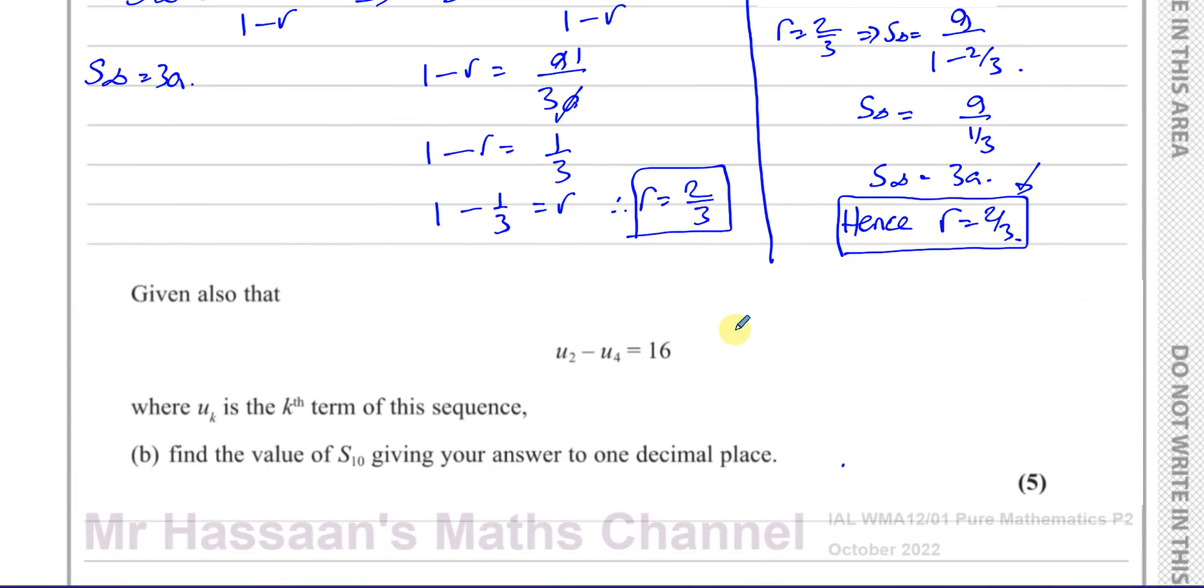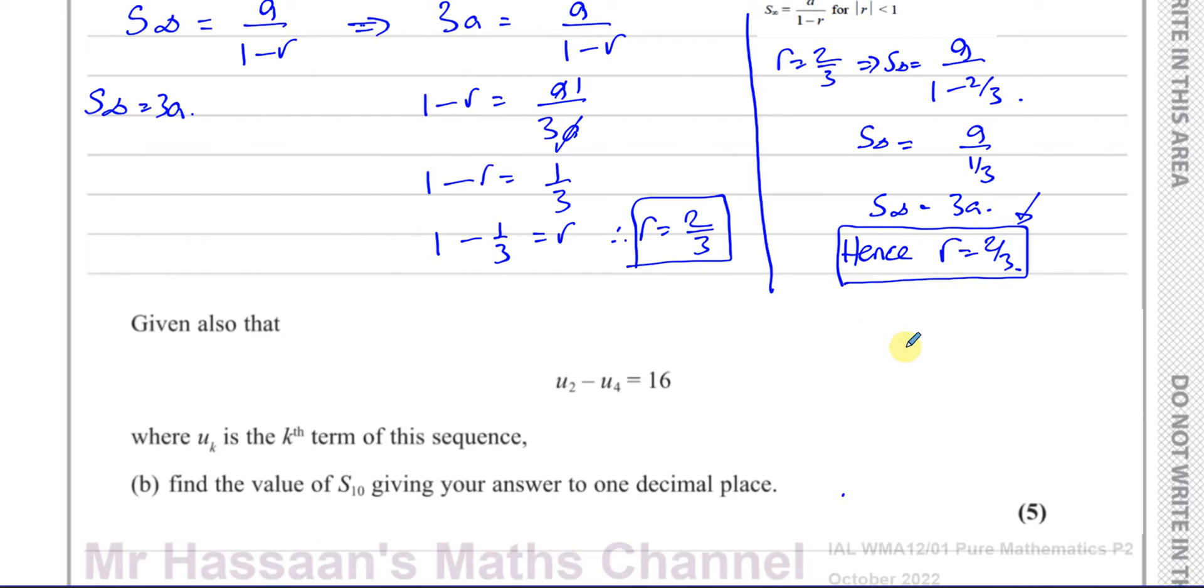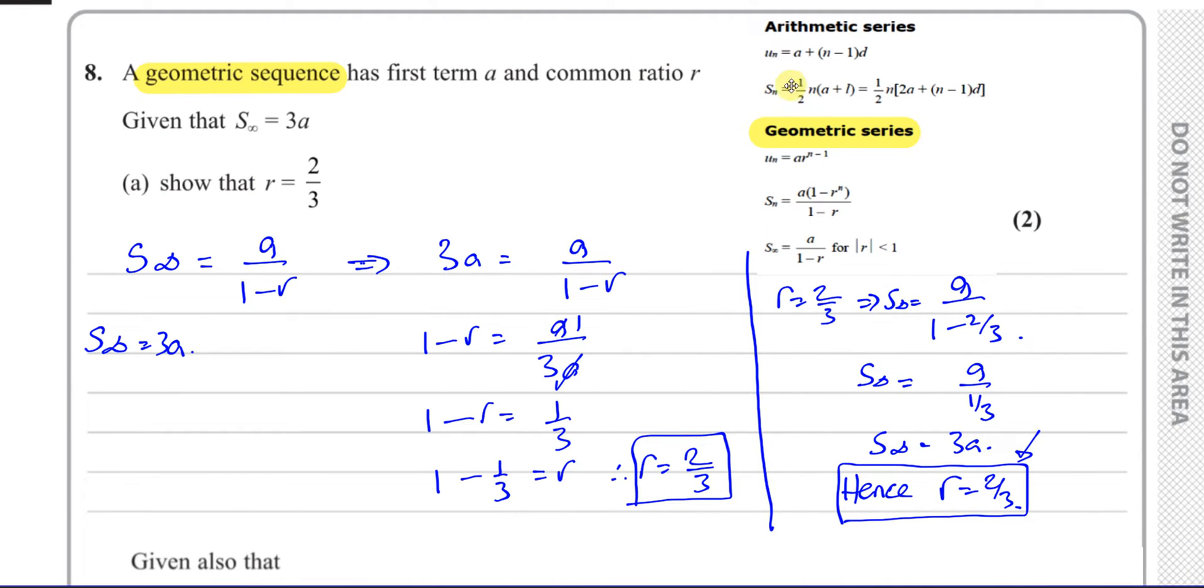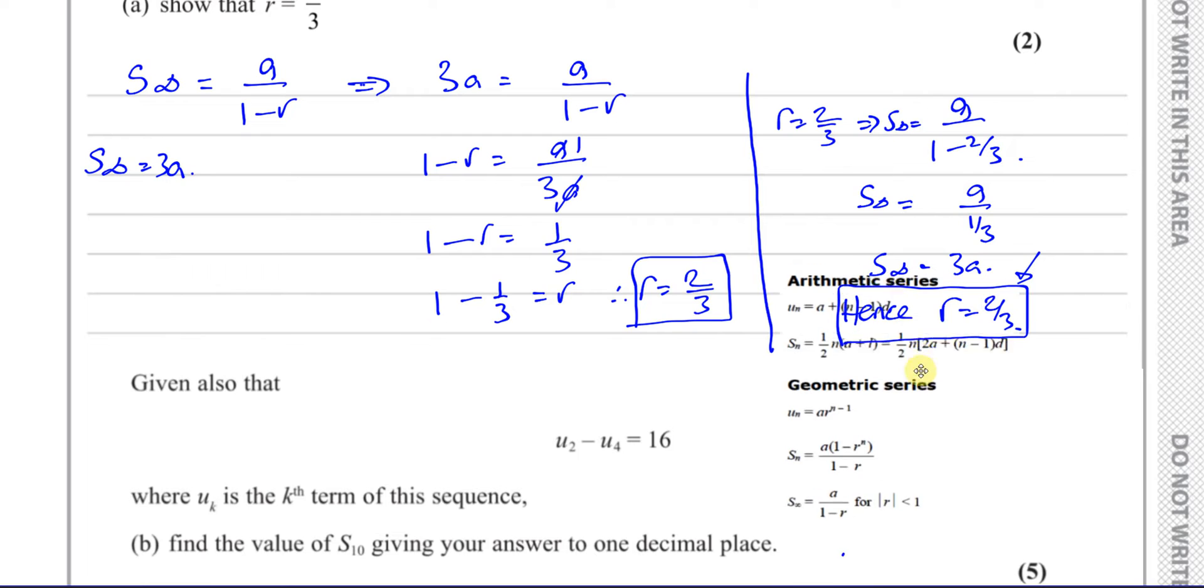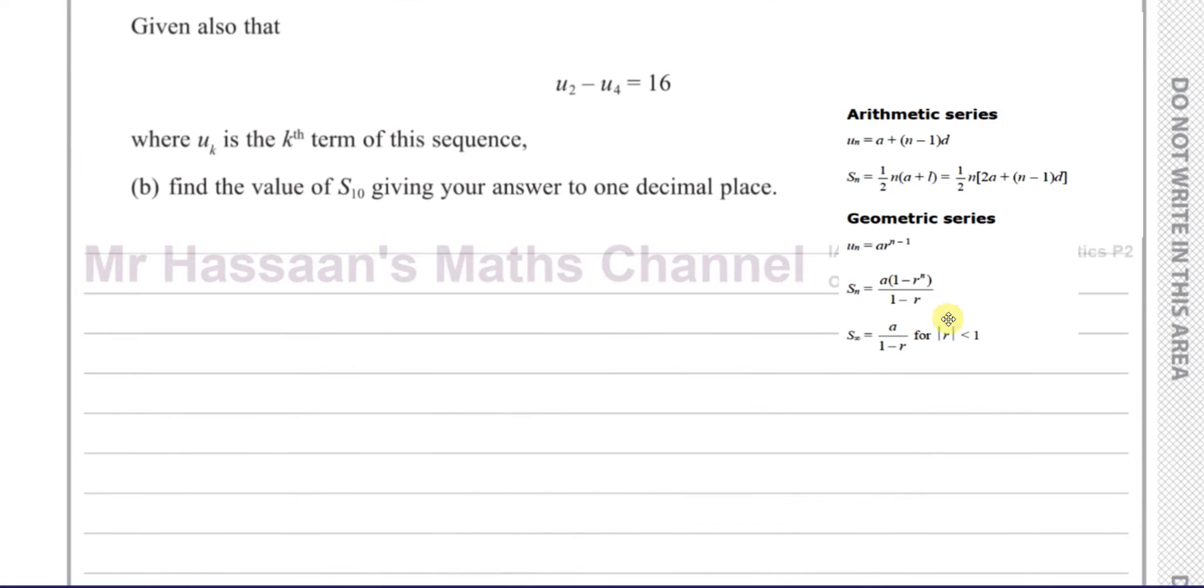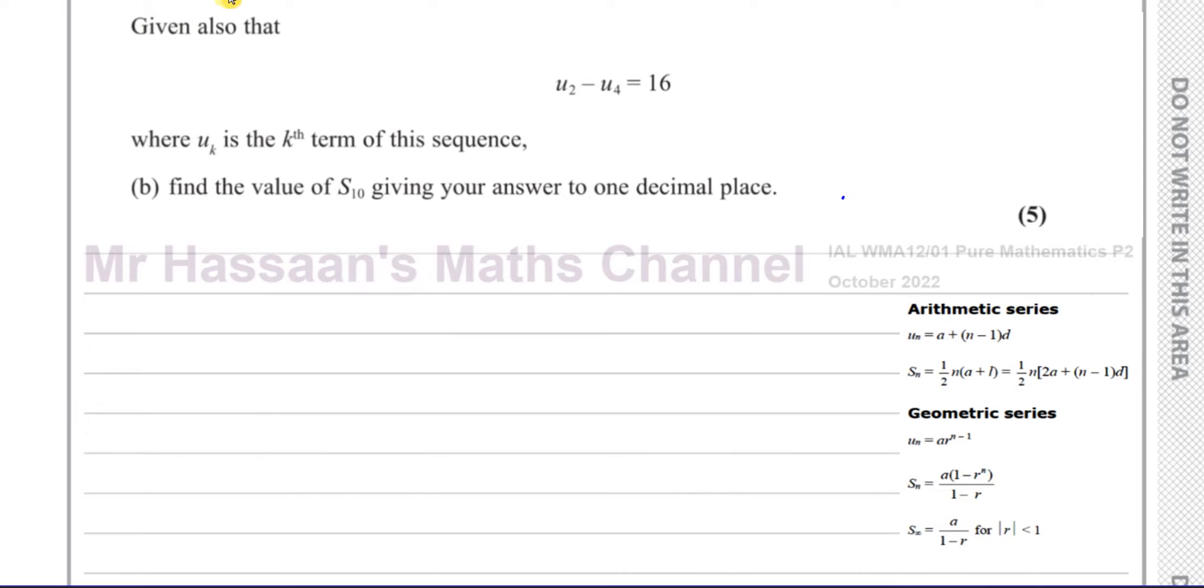Part B says, given also that U2 minus U4 equals 16, so we might need some of these formulas again here. We also know from this question that R is equal to two-thirds, and we know that the sum to infinity is equal to 3A. Those are the information that we know from before. It says, given also that U2 minus U4 equals 16, where UK is a Kth term of the sequence, find the value of S10, giving your answer to one decimal place.